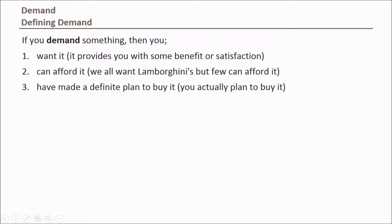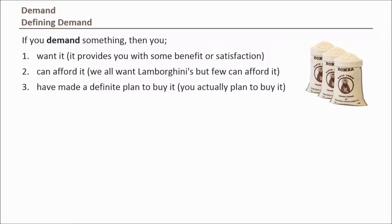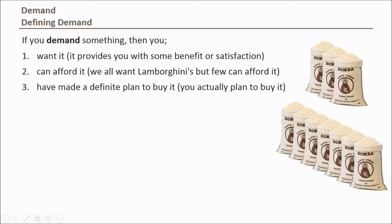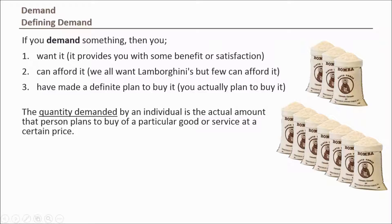We then need to determine the actual amount an individual wants. I might be willing and able to buy three bags of rice while my neighbor is willing and able to buy seven. Each of these amounts is referred to as the quantity demanded for each good per individual. Adding all bags of rice demanded by a population gives us the total population's quantity demanded for rice — the actual amount demanded over a specific period, usually around a year.